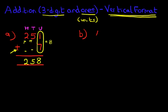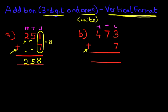Let's look at our second one. Let's label the columns again: units, tens, and hundreds. So this time we've got 473 plus 7.